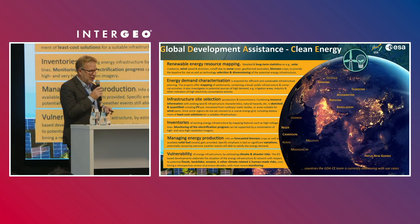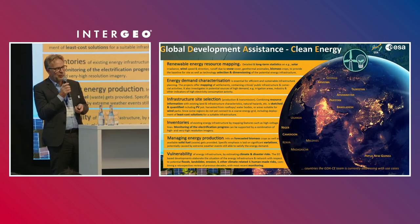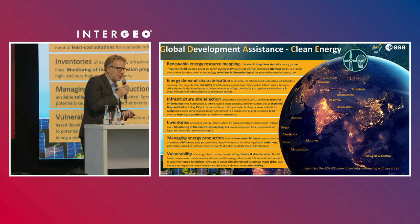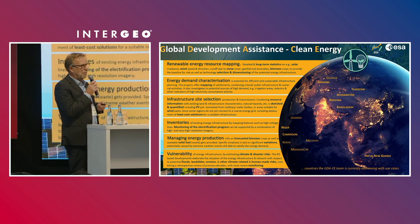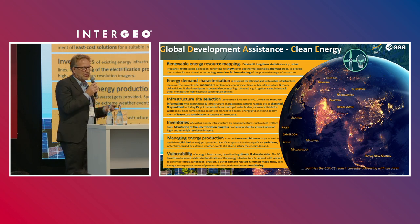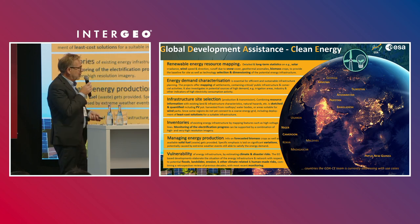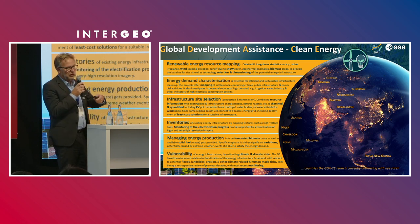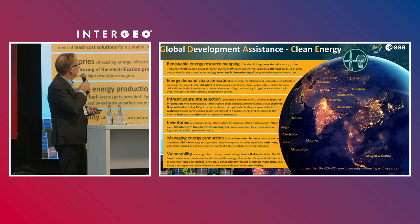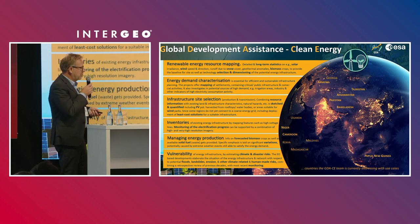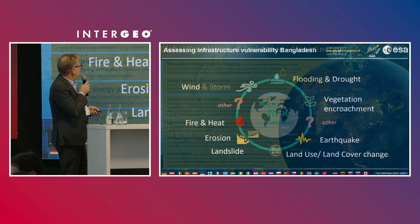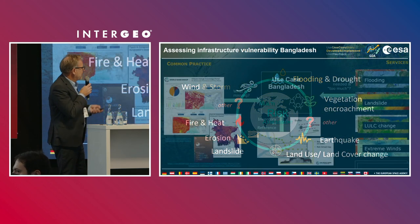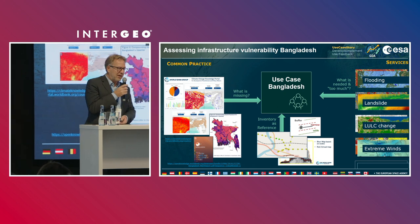Another example I would like to highlight is financed by ESA — it's about global development assistance. What are the missing pieces of information when planning a sustainable energy transition? You need energy resource mapping, demand assessment, knowing which energy resource has the highest potential, infrastructure site selection and inventory, managing energy production, and also vulnerability assessment. I would like to pick up what I mentioned before: it's the vulnerability of the asset.